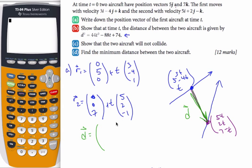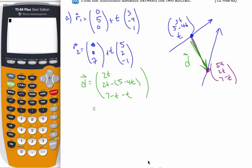So, 5T minus 3T is 2T. 2T minus this. So, 2T minus (5 - 4T). And then 7 minus T minus T. Which is 2T minus 5 plus 6T. And then 7 minus 2T. That is the distance vector here.